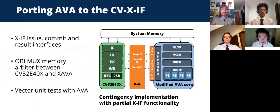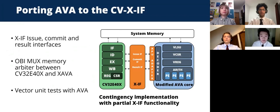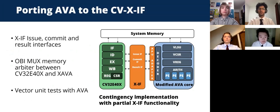Although the memory extension interfaces weren't successfully connected in time for integration, the issue and result interfaces were. A top-level adapter module was created to convert AVA accelerator signals to those communicated through the extension interface. A key feature introduced was handshaking within the issue interface: an acknowledgement packet is sent back to the central core after an offload is requested, containing information such as whether a writeback was required. The result interface was straightforward to integrate, returning results of the accelerator to the core. The commit interface functionality is currently in a minimal state, tied off to always offload the instruction. Testing was completed using the included AVA vector unit tests, passing all but one test involving the vector set vector length instruction.